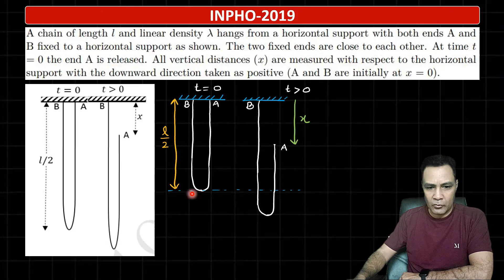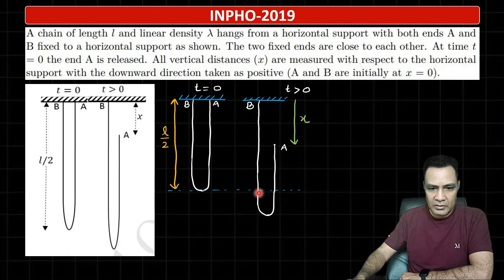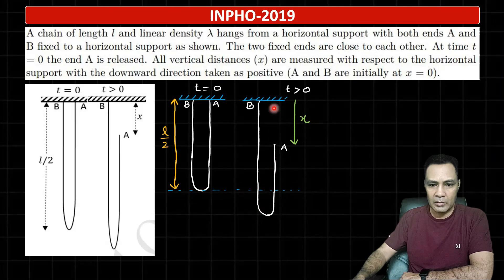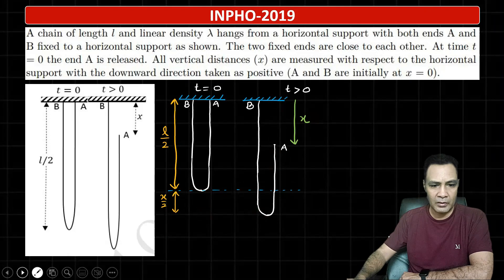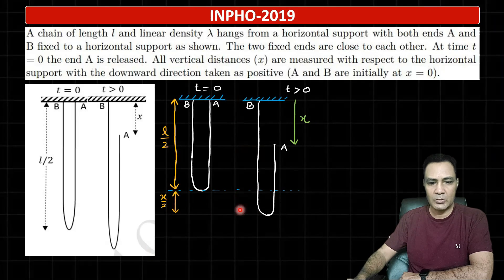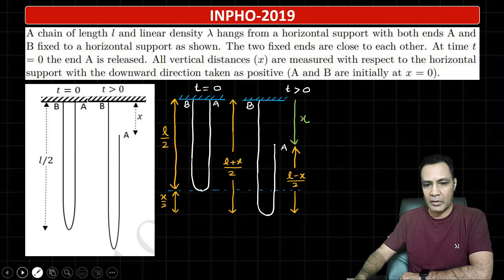I've drawn a line from the bottommost level of the chain at the initial level. The extra length below this line equals the length fallen, which is x. So this extra length is x/2 on each side, meaning this length is x/2. So if this part is x/2 and the total is L/2, this length must be (L + x)/2, and since total length is L, the other part is (L − x)/2.